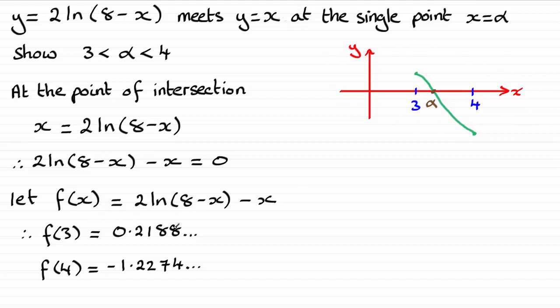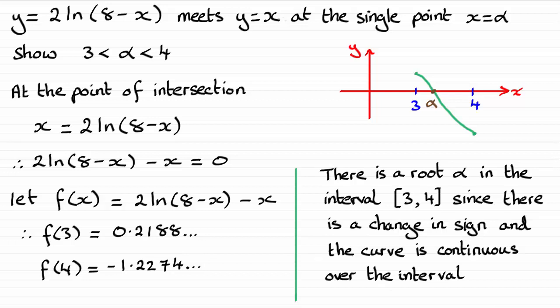Now you don't need to draw this graph, but you do need to be able to show that there is a change in sign and you need to write a conclusion. Something along these kind of lines, that there is a root alpha in the interval 3, 4.